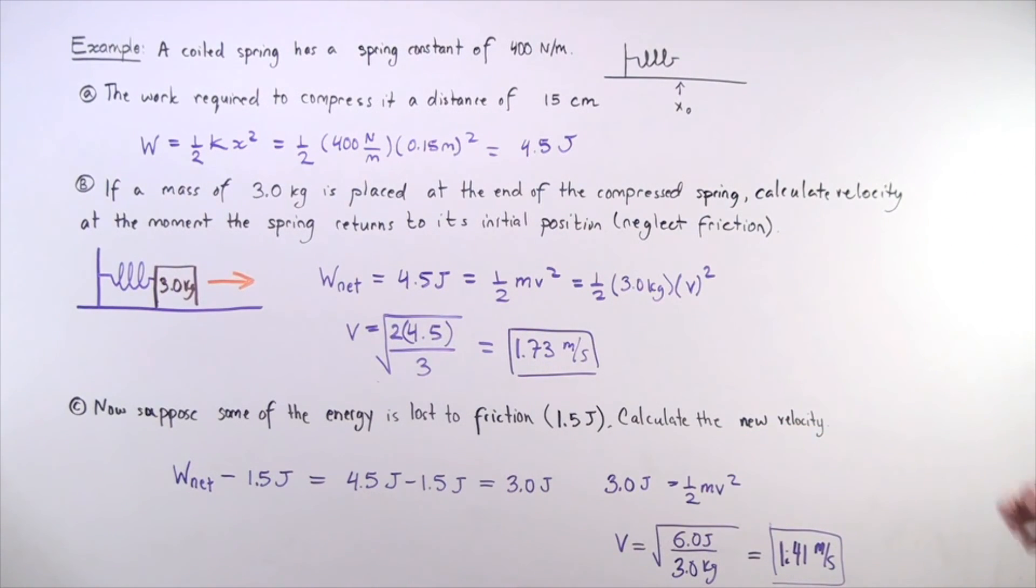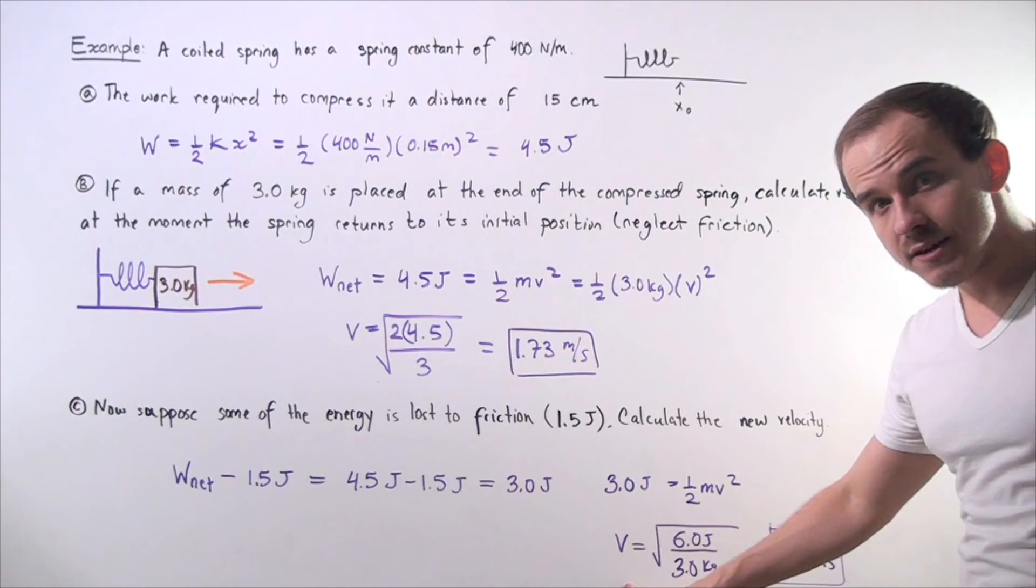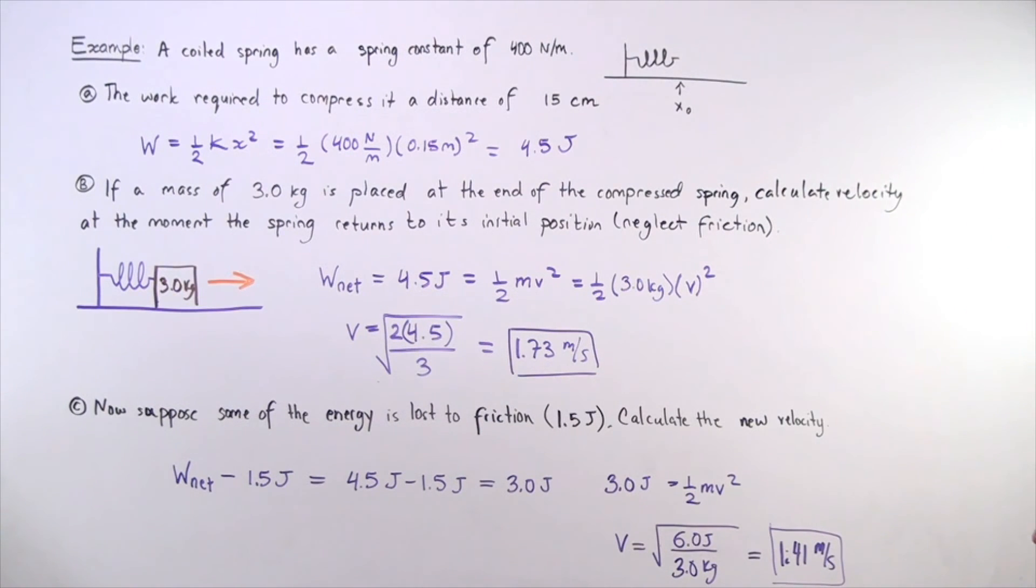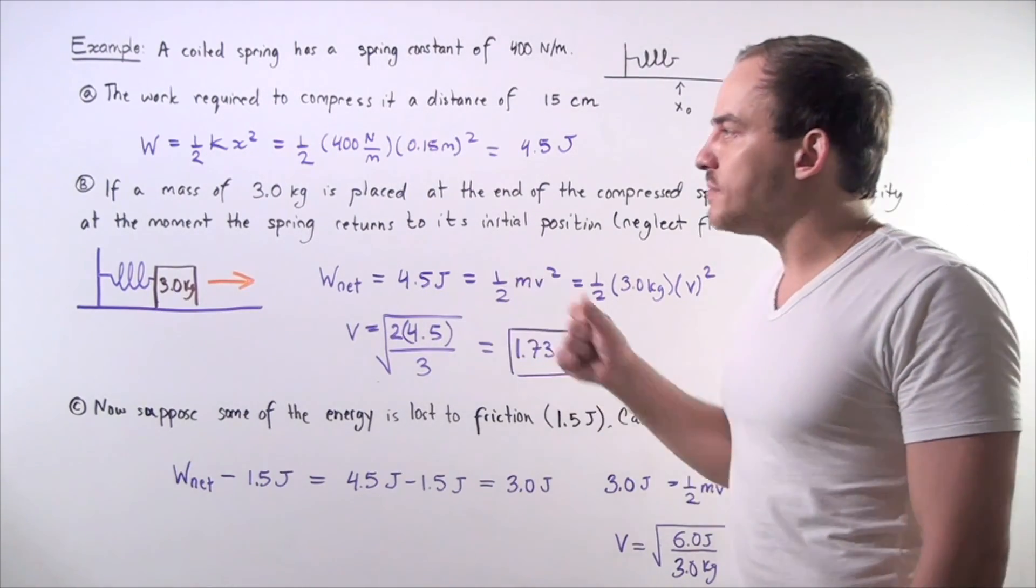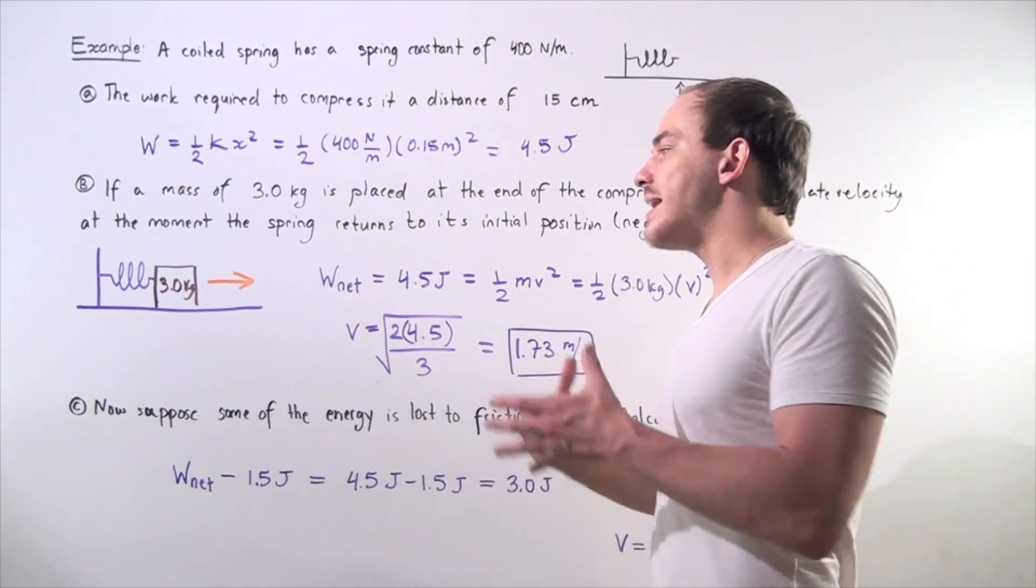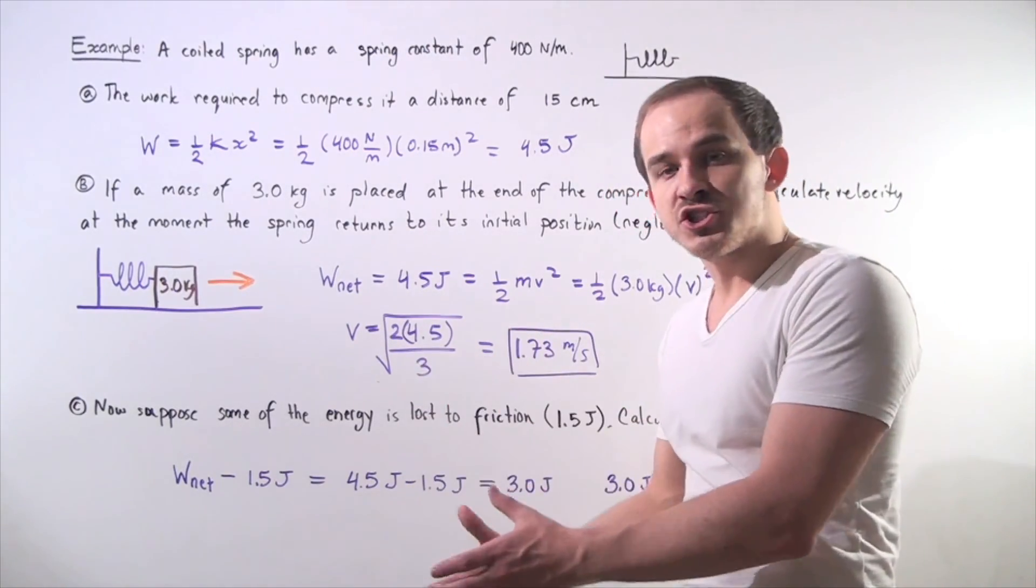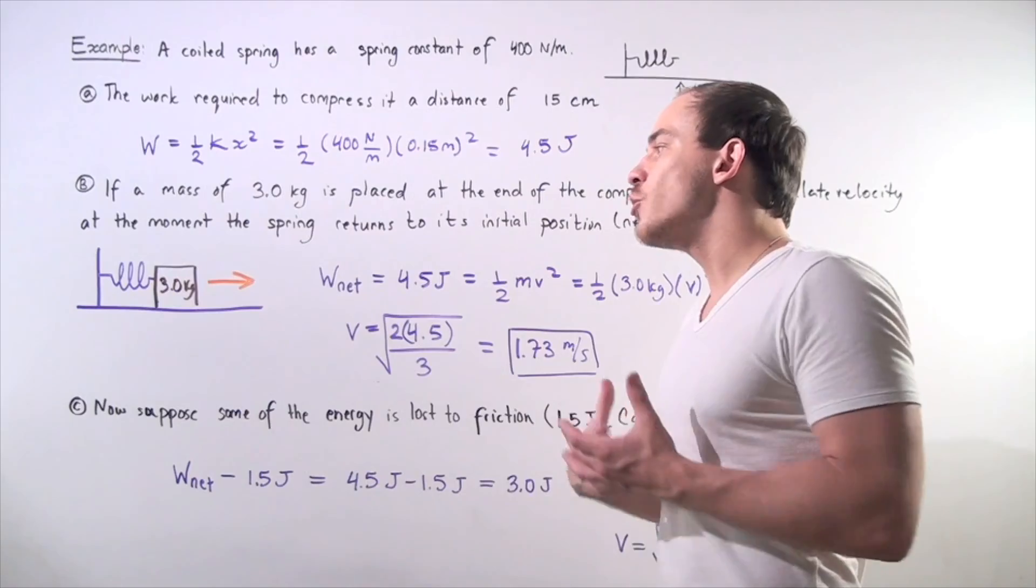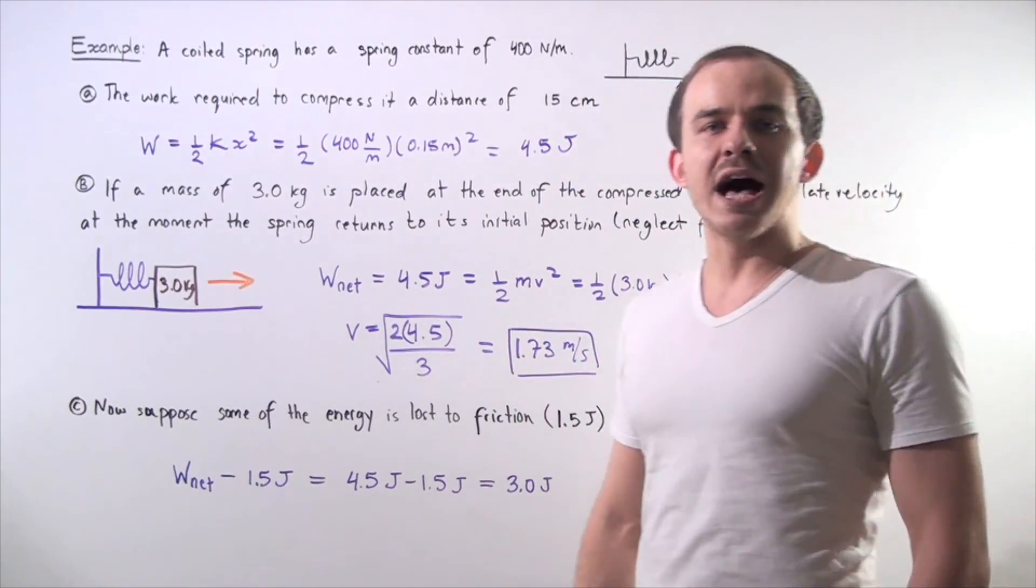We solve for velocity. And we see that velocity, when we have friction, is 1.41 meters per second. It's slightly less than part B. And that makes sense because we lost some of that energy to friction, so we have less energy to accelerate our object to a higher velocity.